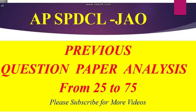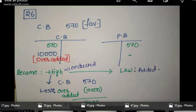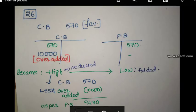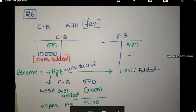In the question paper: bank balance as per cash book is ₹570 rupees. The debit side of cash book bank column is over-added with ₹10,000. What will be the balance as per passbook? This is a question from bank reconciliation statement. Using the short-cut trick: cash book balance ₹570, which is favorable. The debit side of cash book bank column is over-added with ₹10,000.